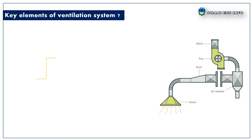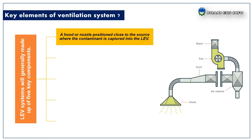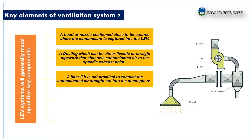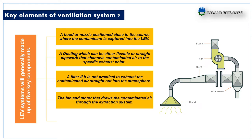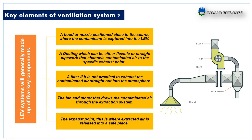Next, the key elements of a ventilation system. A local exhaust ventilation system will generally be made up of five key components. First, a hood or nozzle positioned close to the source where the contaminant is captured into the LEV. Second, ducting — either flexible or rigid pipework — that channels the contaminated air to the exhaust point. Third, a filter, if it is not practical to exhaust contaminated air directly into the atmosphere. Fourth, the fan and motor that draws the contaminated air through the extraction system. Finally, the exhaust point, where extracted air is released into a safe place.